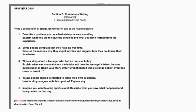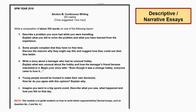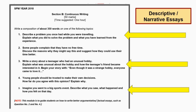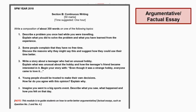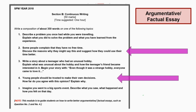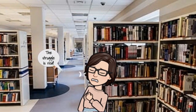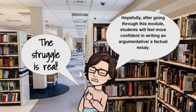This is the list for SPN year 2018. There are 5 questions in section B, 50 marks, with a suggested time of 1 hour or 60 minutes. There are two categories. The first category is descriptive or narrative essays — questions 1, 3, and 5 for year 2018. The second category is argumentative or factual essay — questions 2 and 4. This lesson guides students on how to write better argumentative or factual essays, because many students face difficulties when trying to answer this question.